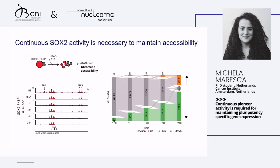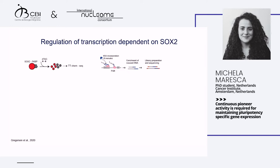There are other regions that more transiently lose accessibility, but within six hours we saturate all effects. When we quantify the number of regions losing accessibility, already after 30 minutes there are almost 1,500 regions that lose accessibility — that's really fast. Those numbers increase over time reaching the highest number at 24 hours. There are also regions that gain accessibility, though much more slowly — only after 24 hours do we get around 5,000 regions with new accessibility.